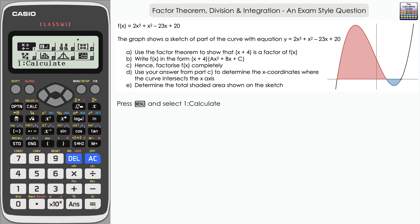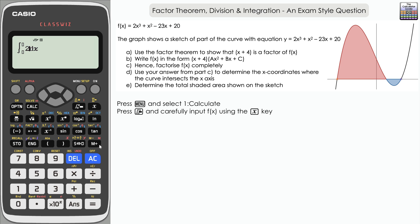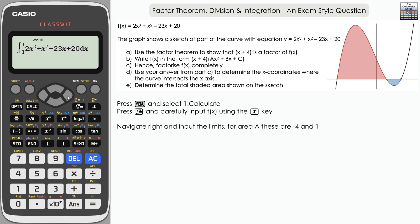Back into calculate mode. Press the integration button and carefully input the original f(x): 2x³ + x² - 23x + 20 using the x button. Navigate right to input the limits. We'll work out the red area (area A) and the blue area (area B) separately, because one is below the x-axis and one is above, and we need to add their absolute values to get the correct total area.